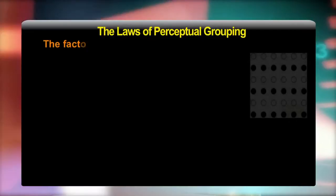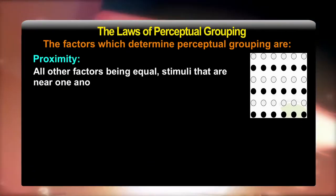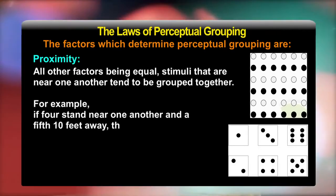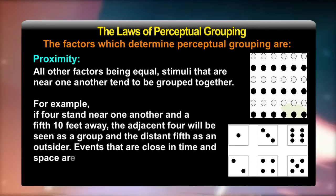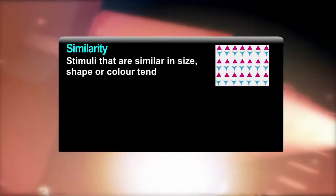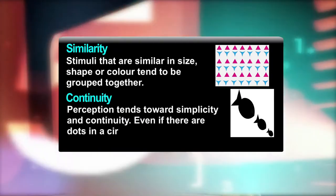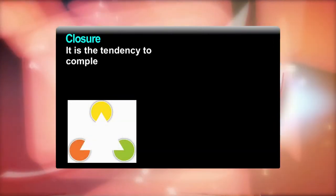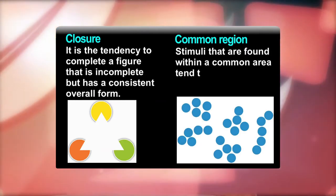The laws of perceptual grouping are governed by several factors. Proximity: stimuli that are near one another tend to be grouped together. Similarity: stimuli that are similar in size, shape, or color tend to be grouped together. Continuity: perception tends towards simplicity and continuity — even dots arranged in a circular fashion will be seen as a complete circle. Closure: the tendency to complete a figure that is incomplete but has a consistent overall form. Common region: stimuli found within a common area tend to be seen as a group.